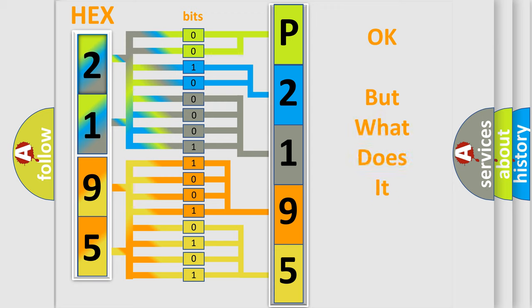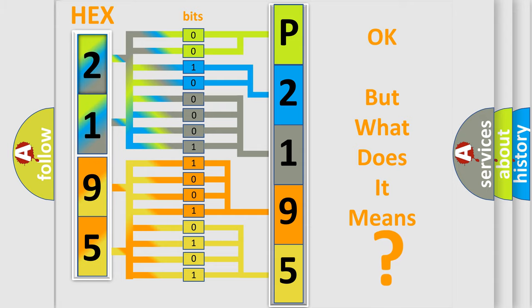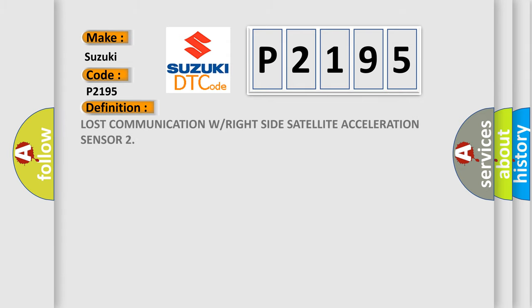We now know how the diagnostic tool translates received information into a more comprehensible format. The number itself does not make sense if we cannot assign information about what it actually expresses. So, what does the diagnostic trouble code P2195 interpret specifically for Suzuki car manufacturers? The basic definition is: Lost communication with the right side satellite acceleration sensor.